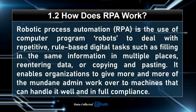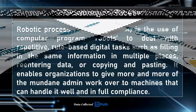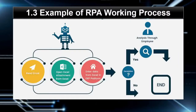How does RPA work? Robotic Process Automation is the use of computer program robots to deal with repetitive, rule-based digital tasks, such as filling in the same information in multiple places, re-entering data, or copying and pasting. It enables organizations to hand over more mundane admin work to machines that can handle it well and in full compliance. The robotic process is much faster than the manual process.